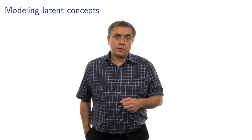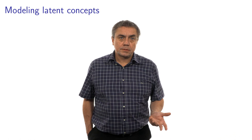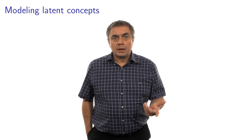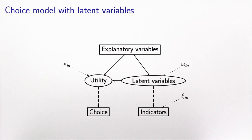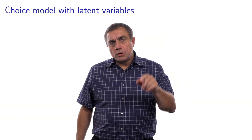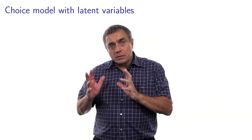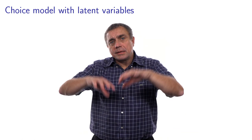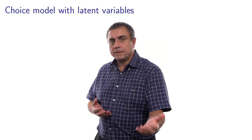In the previous video, we introduced a framework to include latent variables into choice models. We now provide a step-by-step derivation of the likelihood function associated with this framework. On this picture, on the left we have the choice model introduced first, and on the right we have the latent variable model included as an extension of factor analysis. We will consider each of these relations illustrated in the picture and discuss the corresponding equation, then put everything together to have a model and a likelihood function.